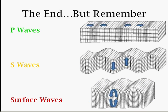All right guys, that's it for now. Please remember P waves, S waves, and surface waves — the three types of seismic waves caused by earthquakes. Thanks for listening. Bye.